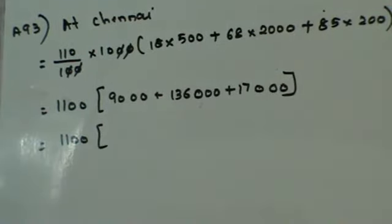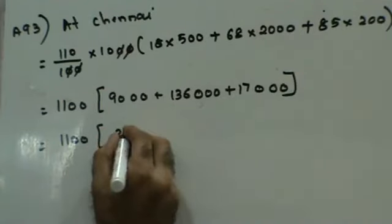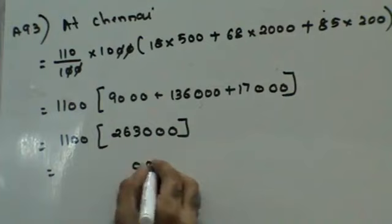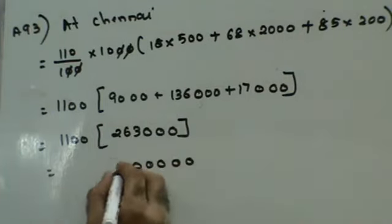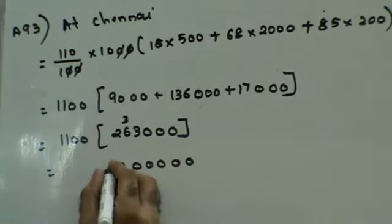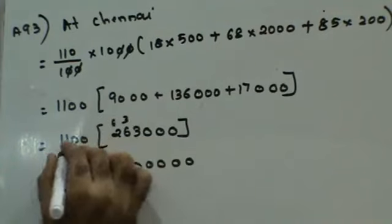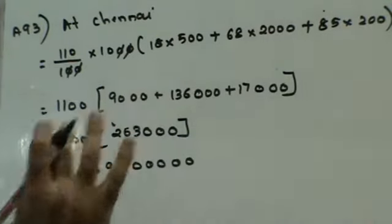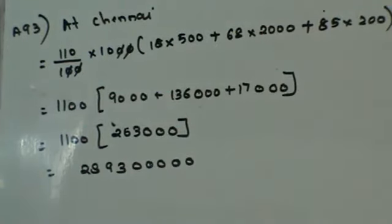That would be the sales at Chennai. So this is going to be 1100, 18 into 500, 9000. 68 into 2000, 136000, plus 85 into 200, 17000. 1100, so please add this. 9, 17 and 9 is 27, 27 and 36, 9, 26, 57, 63, 9, 263. Someone check that please.